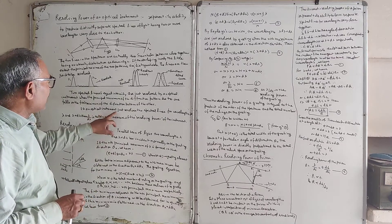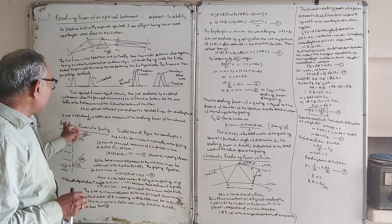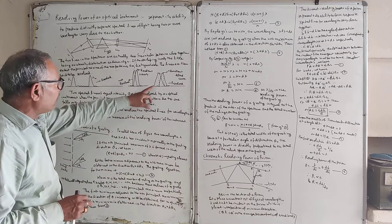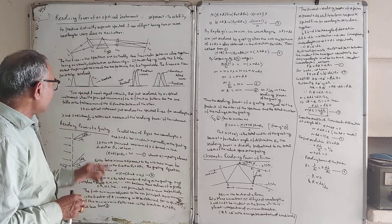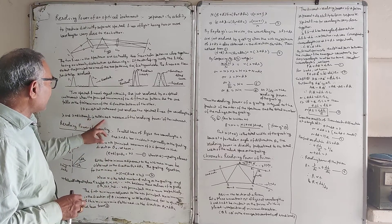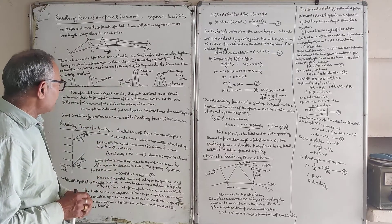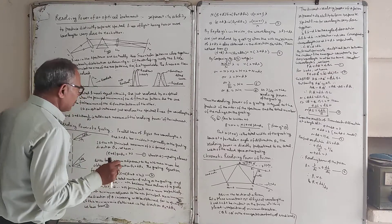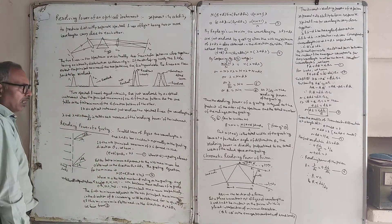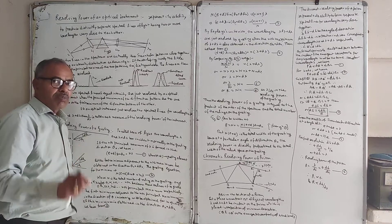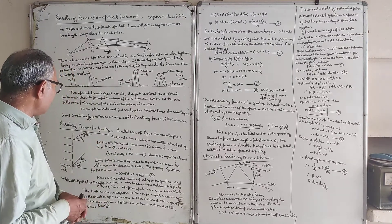If an optical instrument resolves the spectral lines of wavelength lambda and lambda plus d-lambda, then lambda upon d-lambda is taken as the measure of the resolving power of the instrument. We call it the resolving power R, equal to lambda upon d-lambda.